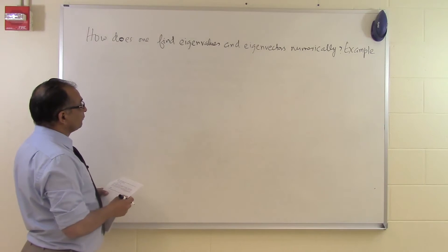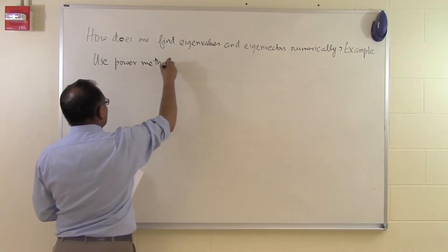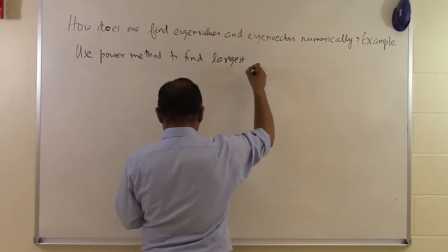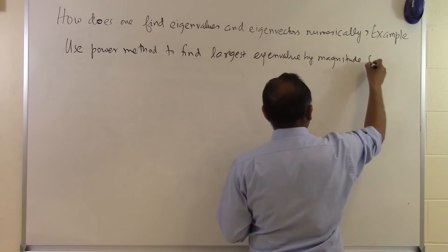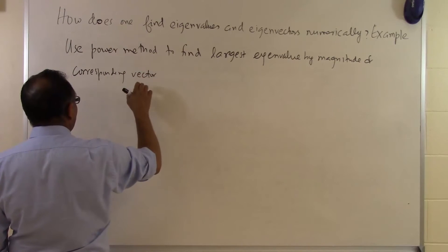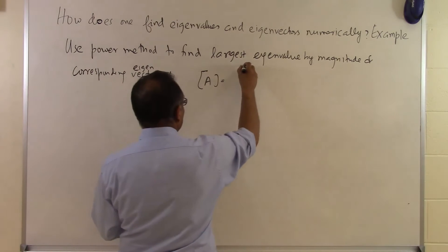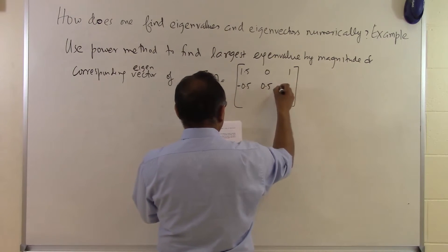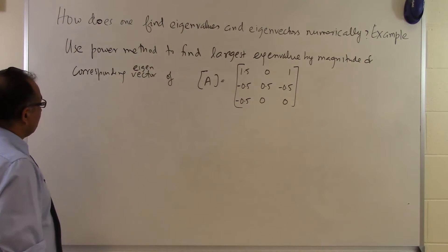In this segment, let's take an example of finding the eigenvalues and eigenvectors numerically. The problem statement says: use the power method to find the largest eigenvalue by magnitude and the corresponding eigenvector of the matrix A, which is given as [1.5, 0.1, -0.5; -0.5, -0.5, 0.0].